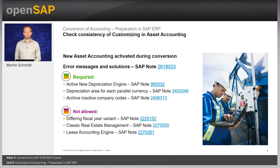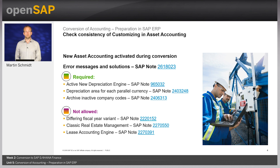You need to set up a depreciation area for each of your parallel currencies assigned in the company code settings of the general ledger. Parallel currencies — also known as second and third local currency — require a separate depreciation area in asset accounting. This was also a requirement in classic asset accounting, but the checks were less strict. Now in new asset accounting, due to the design change, it is a mandatory prerequisite for activation.